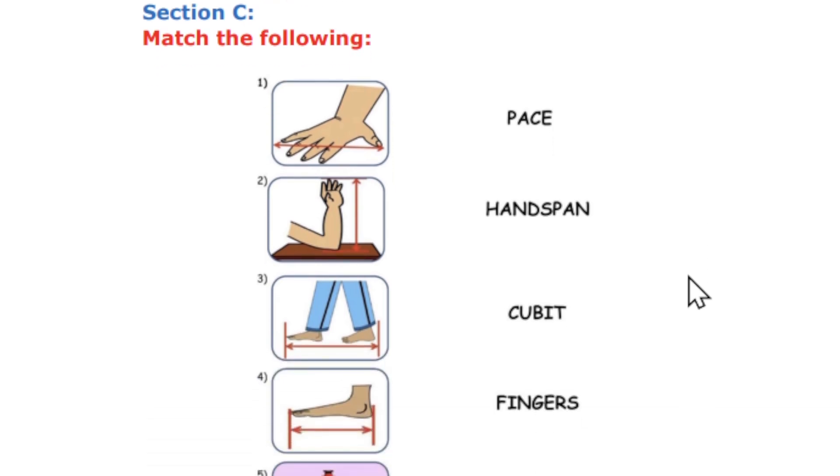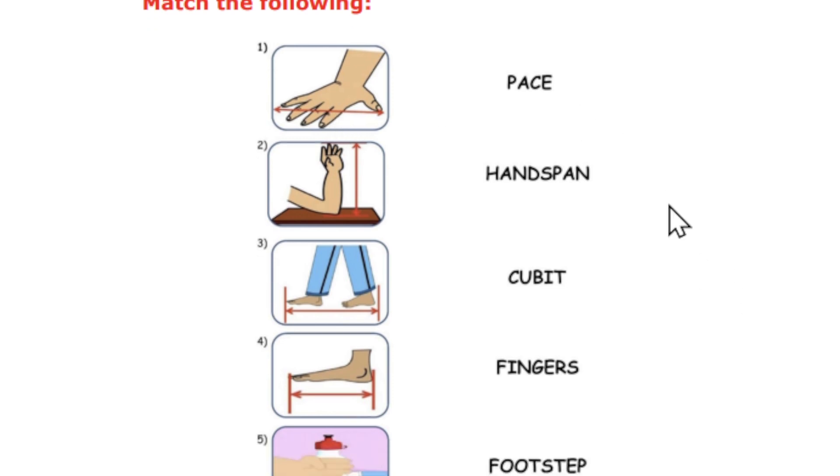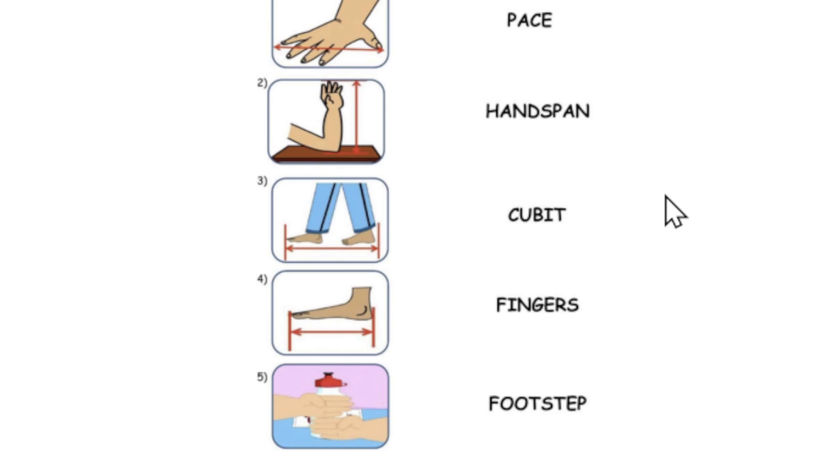The next one is Section C, which is match the following. You need to match the image to the appropriate word. So we have face, hand span, cubit, fingers and footstep.